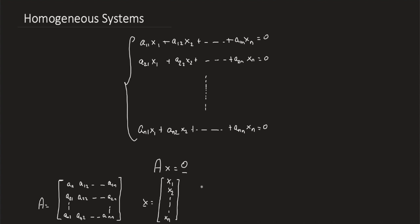This system is always consistent because there's always a solution: when all x's are zero. Replace zeros for all x's and the system is satisfied. You get zero equals zero everywhere. This is called the trivial solution, as it is the easiest and most obvious solution that could be attained.